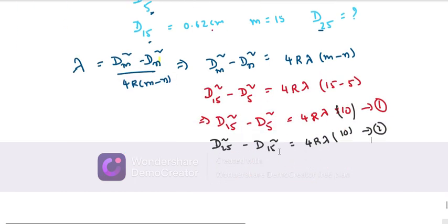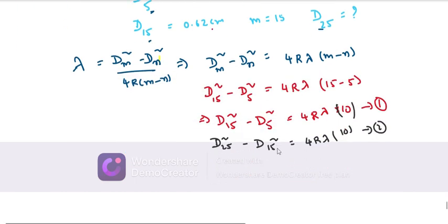From equations 1 and 2, since both right-hand sides equal 4Rλ(10), we have: D₁₅² - D₅² = D₂₅² - D₁₅².